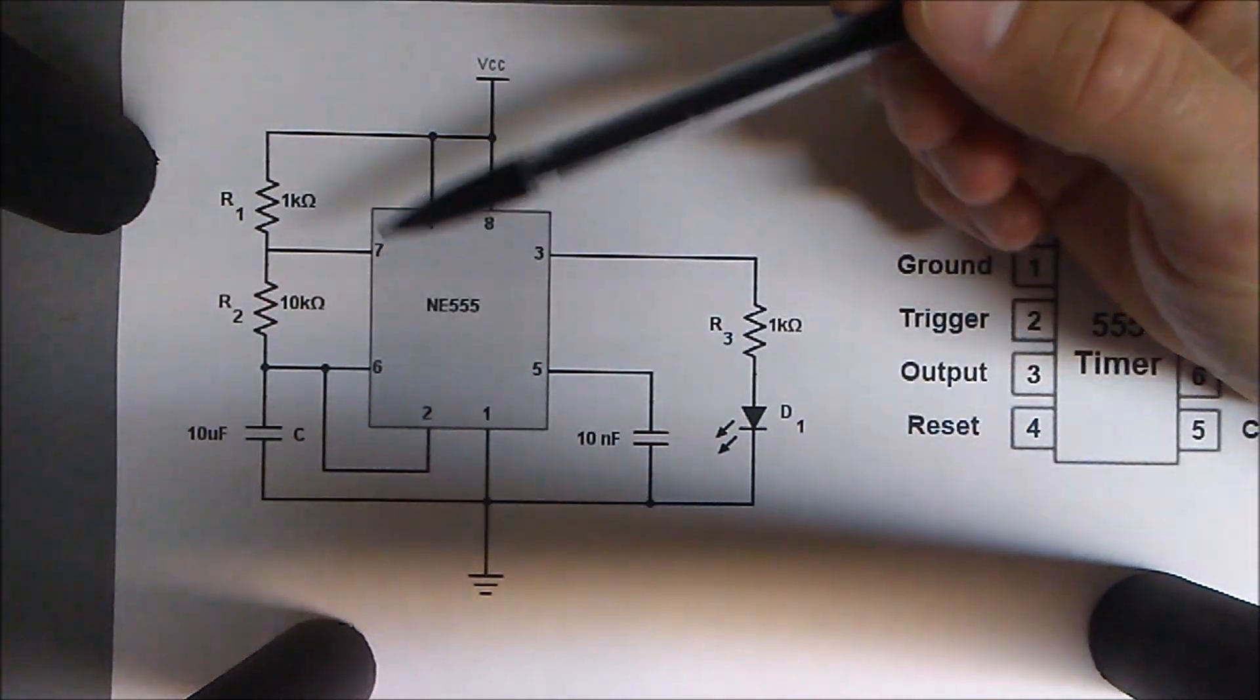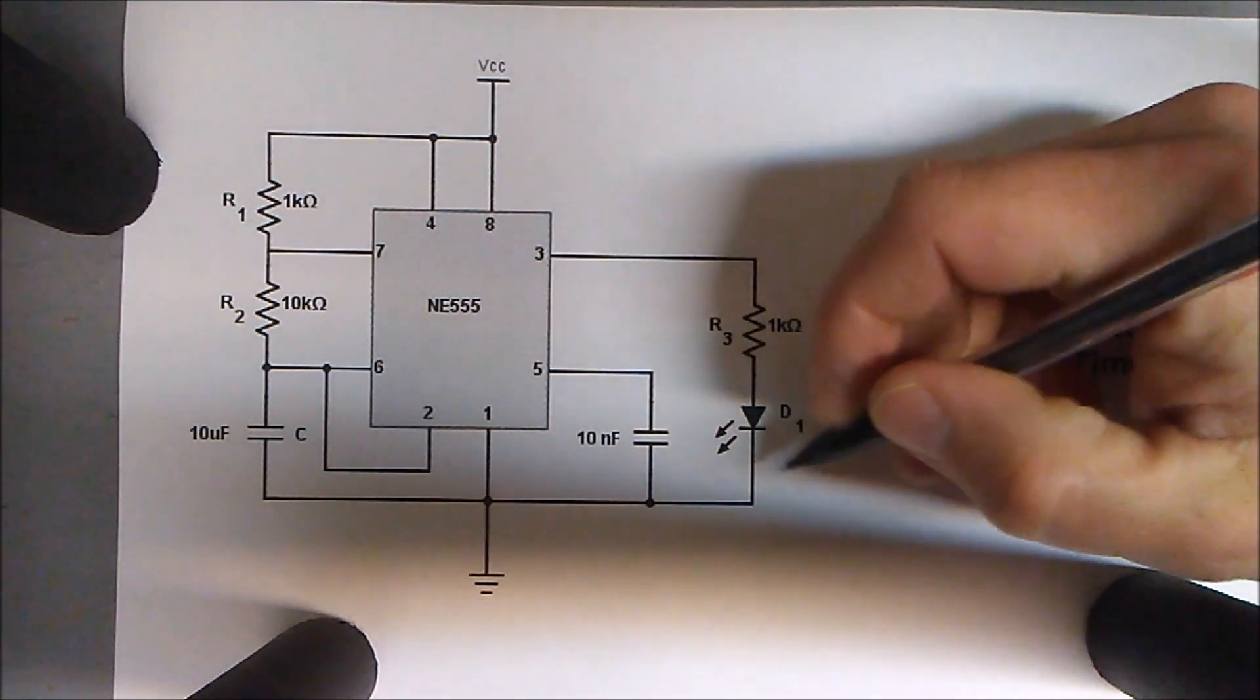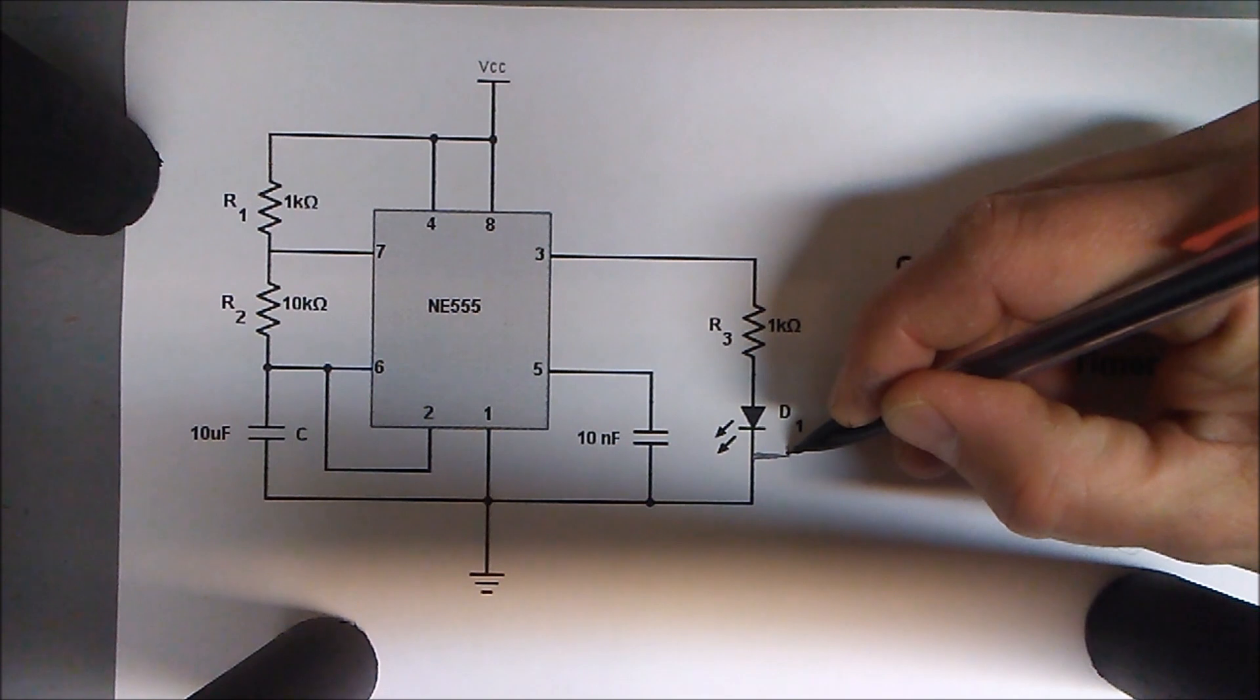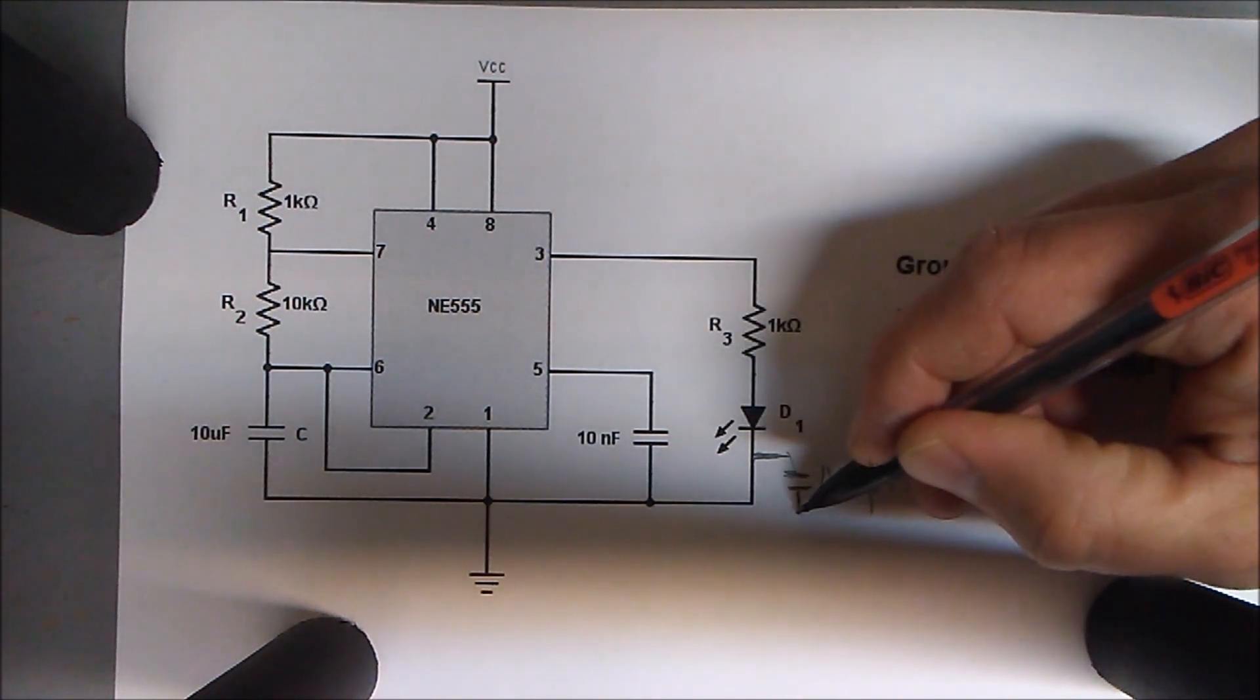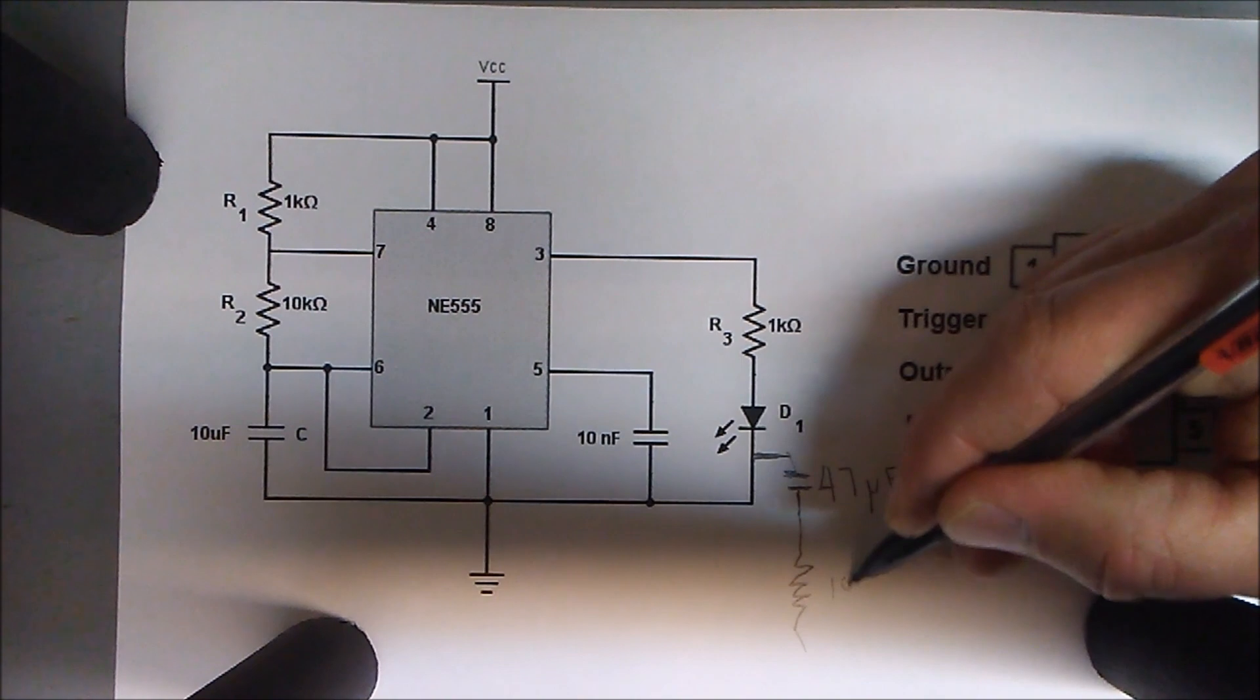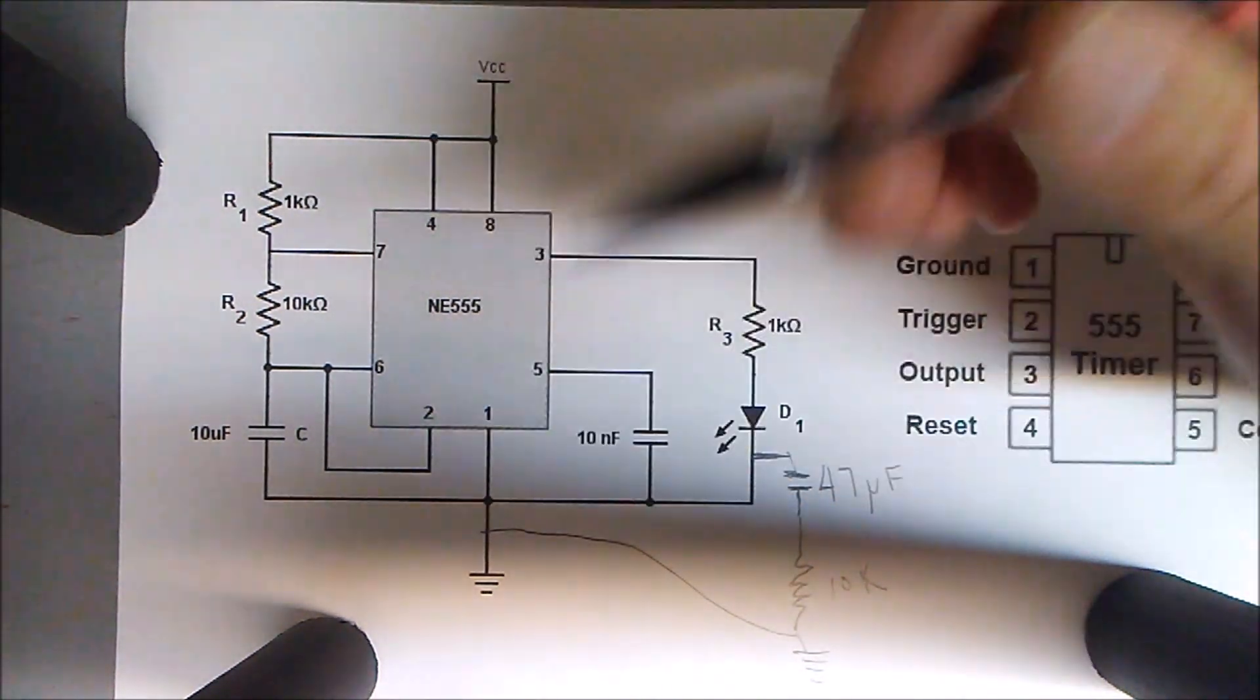And then coming off of the diode, I suppose I could draw it in here. I'll find a pencil that works. I added a capacitor. That's a capacitor symbol. Which was 47 microfarad. And then I added a 10K resistor. And back to ground. Or I could just send it back to ground there. Something like that.